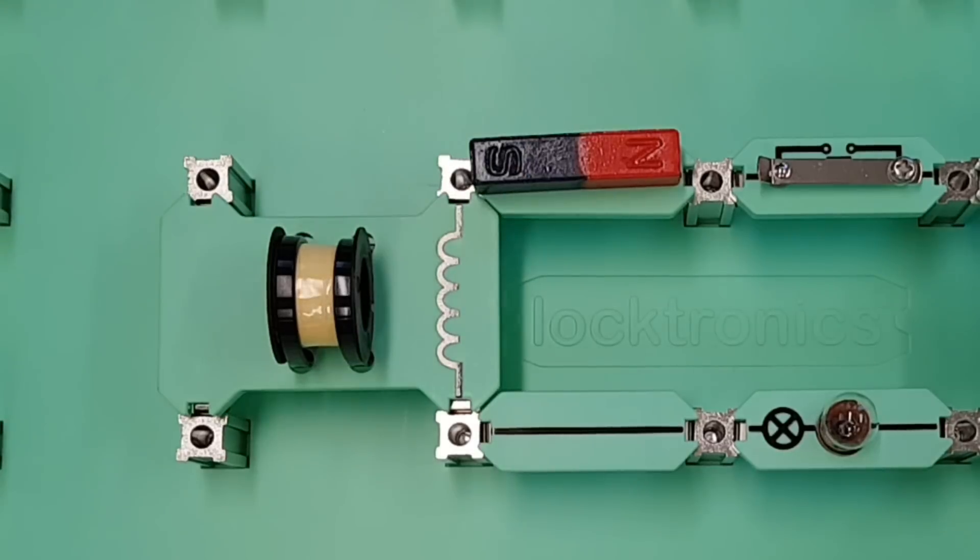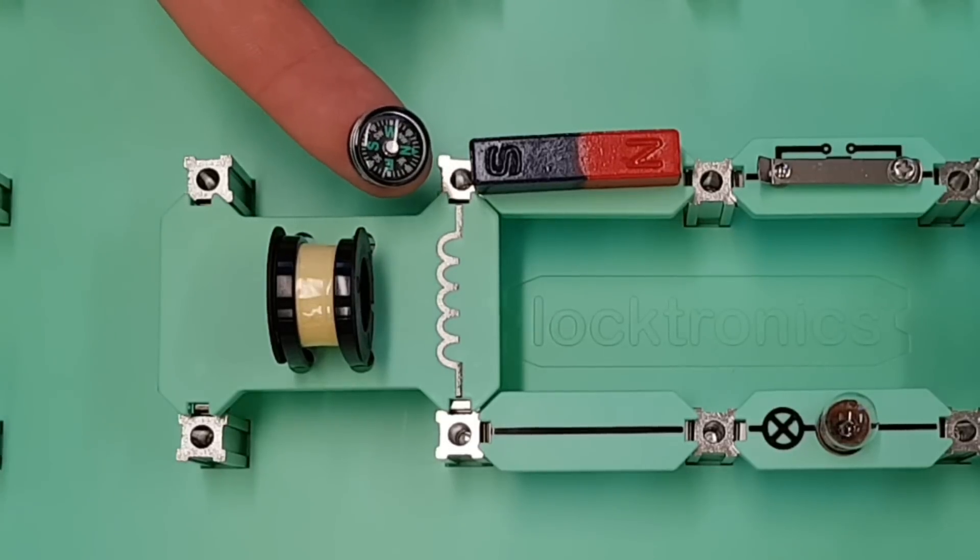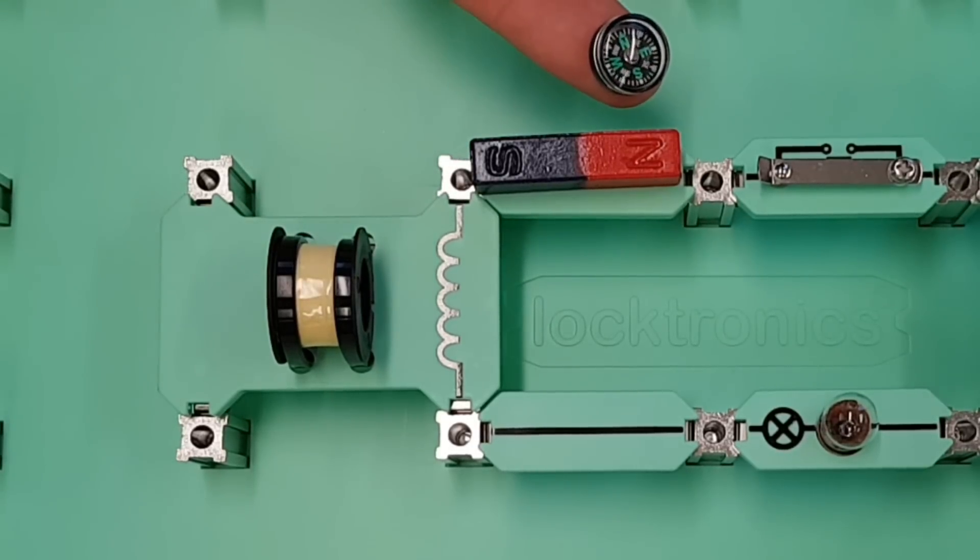Now here I have a bar magnet. This bar magnet is a permanent magnet and you've probably seen things like this during your school life. And if we have a look at this little compass that I've got here, you can see that as I move the compass around the bar magnet, it's actually moving the compass around. The compass is actually helping us to track the magnetic field that exists around this bar magnet.